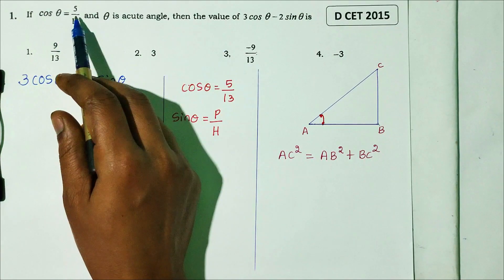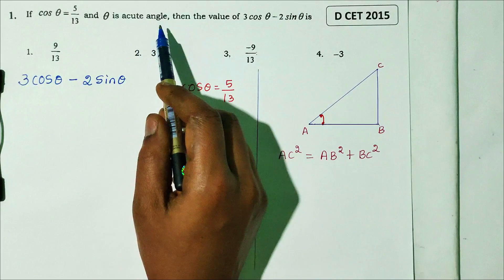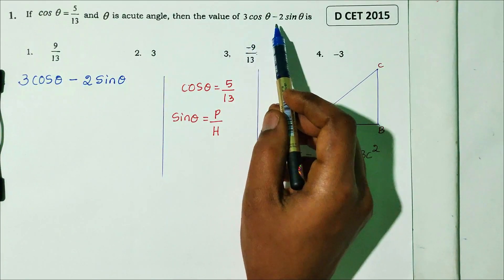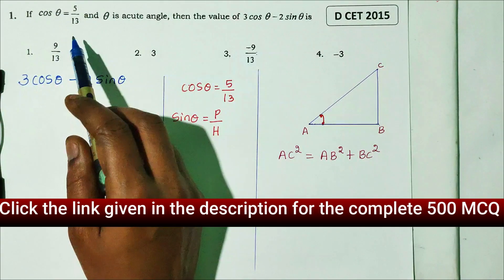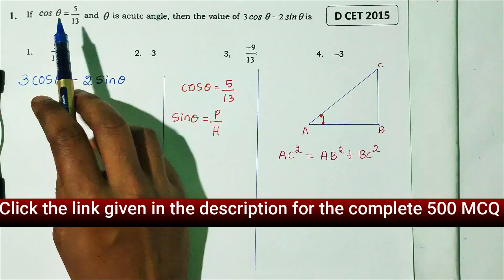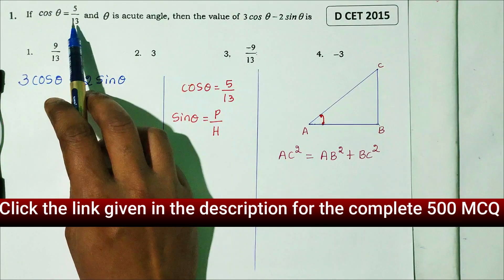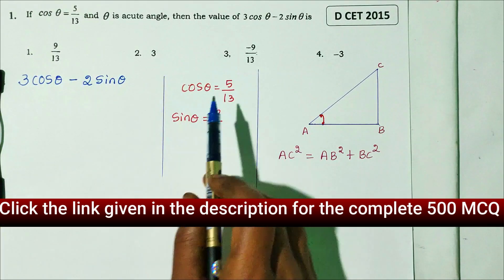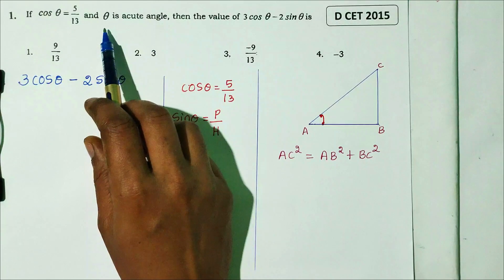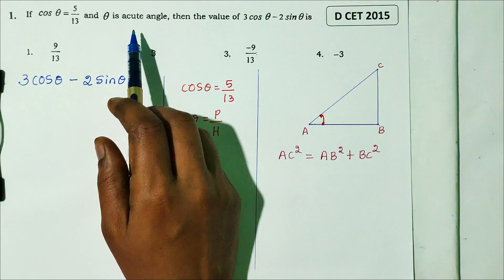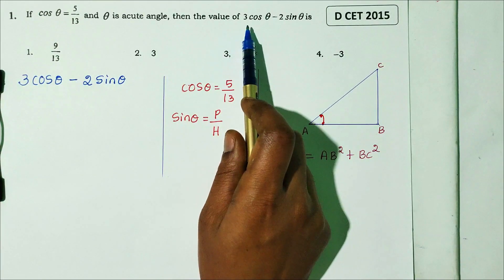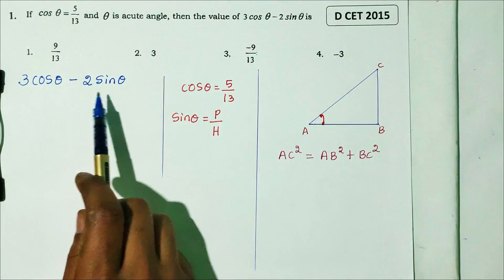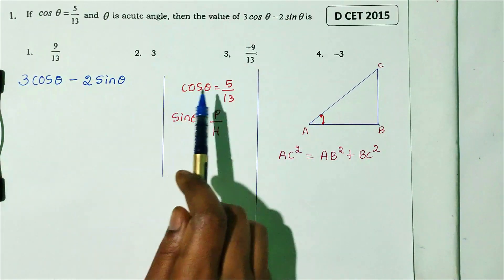Question number one: if cosθ equals 5 by 13 and θ is an acute angle, then find the value of 3cosθ minus 2sinθ. This is from DCT 2015. First, we note that cosθ = 5/13, and since θ is acute, it is less than 90 degrees.